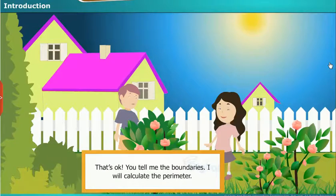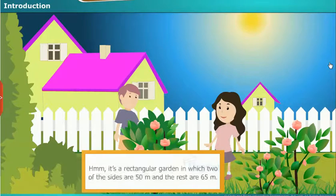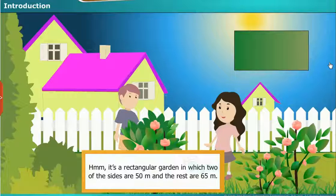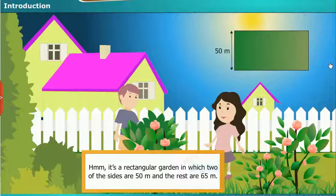That's okay. You tell me the boundaries. I will calculate the perimeter. It's a rectangular garden in which two of the sides are 50 meters and the rest are 65 meters.